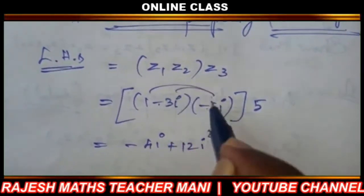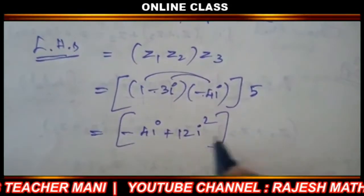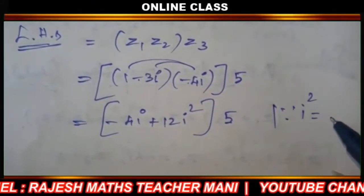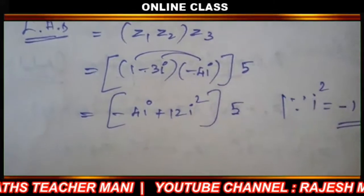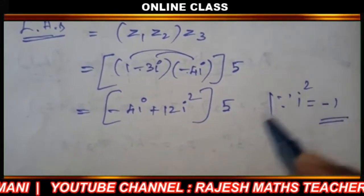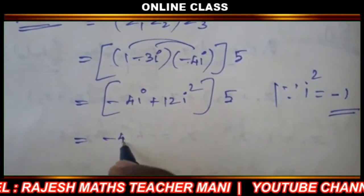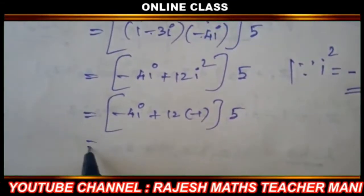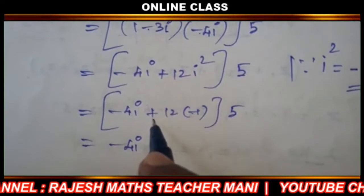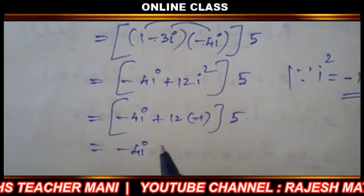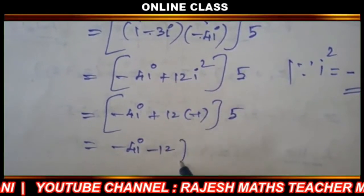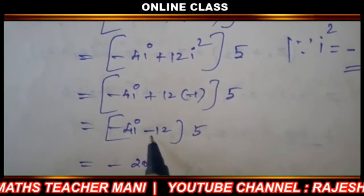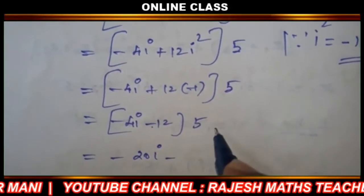Since i squared equals minus 1, the value is: minus 4i plus 12 into i squared equals minus 4i plus 12 into minus 1, which gives minus 12. Multiplied by z3 equals 5, we get minus 12 into 5, so minus 25i minus 12 into 5.